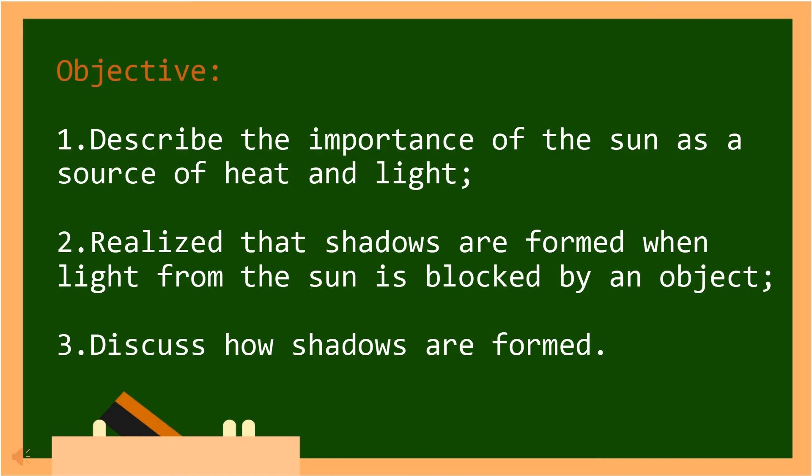At the end of this video lesson, you are able to: 1. Describe the importance of the sun as a source of heat and light. 2. Realize that shadows are formed when light from the sun is blocked by an object. 3. Discuss how shadows are formed.